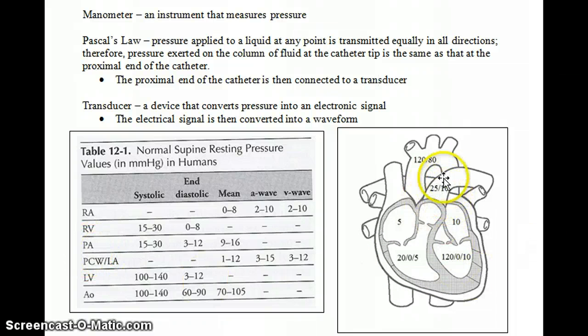Then the chart goes on to the pulmonary artery. So pulmonary artery, the blood pressure is 25 over 10. So that's just your systole over diastole, 25 over 10. Then of course the blood goes out to the lungs, then it comes back to the heart, dumps into the left atrium. The left atrium mean is 10.